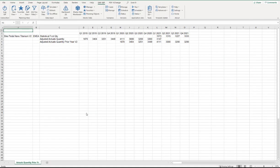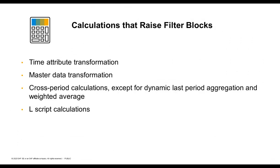Petra gets back to Oliver and asks him to use the newly created key figure in his queries. Oliver does that right away, and he's happy to see that he can run his queries at the level of regions again and increase performance at the same time. There are several types of modelling techniques that raise filter blocks to ensure the functional correctness of calculations. These include time attribute transformation, master data transformation, cross period calculations — except for dynamic last period aggregation and weighted average — as well as Lscript calculations.